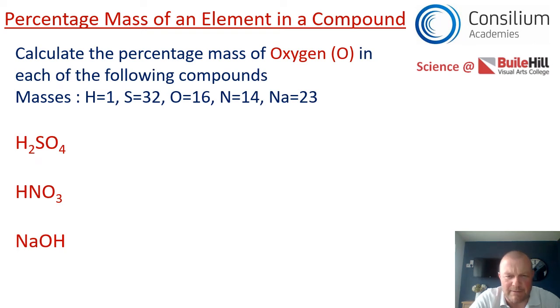Time for some practice then. There are three compounds on the screen. We've got H2SO4, HNO3, NaOH. And each of those compounds has oxygen in them. So what I'd like you to do is you're treating them as three separate questions. I'd like you to calculate the percentage mass of oxygen in each of those compounds. And the full list of masses that you need are on the screen. So pause the video now. As always, show your full working out. And we'll check your work in a short while.